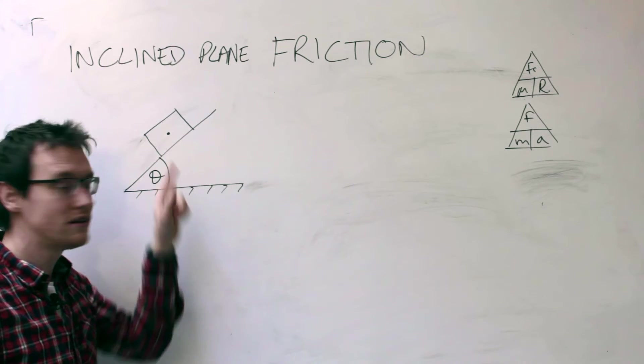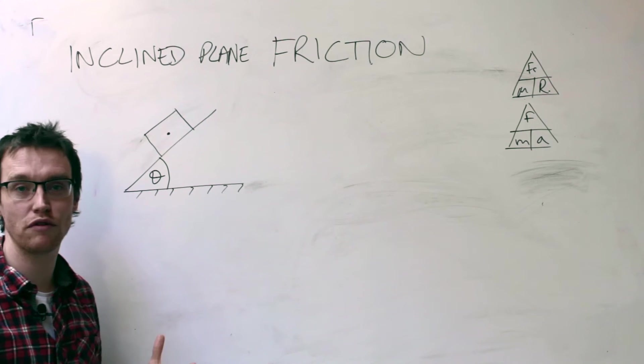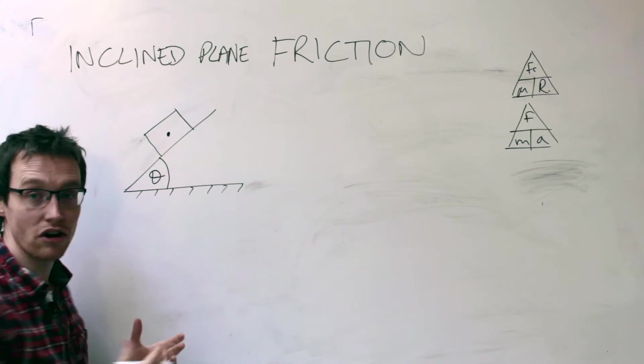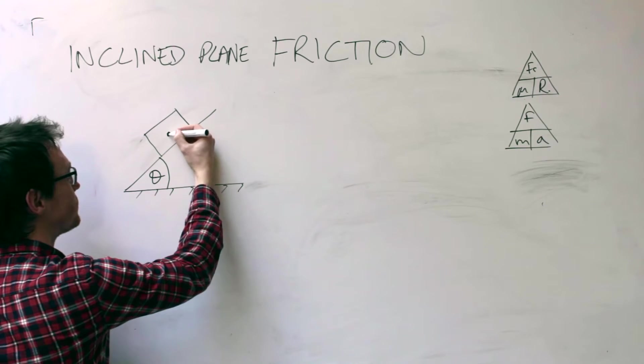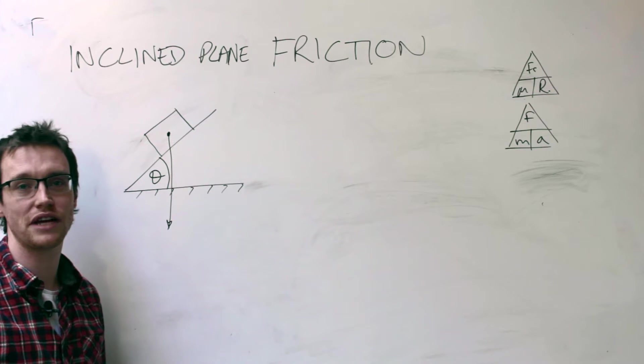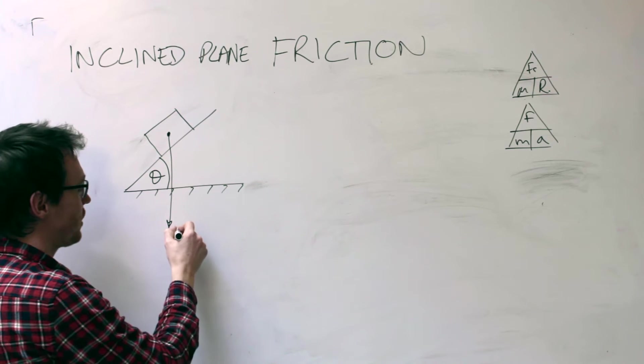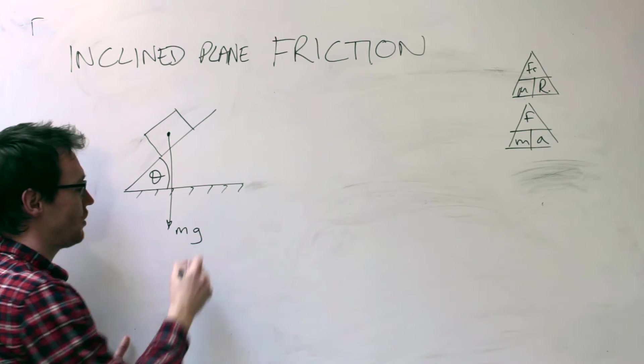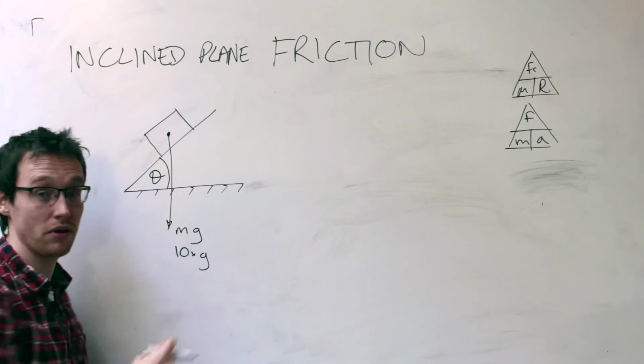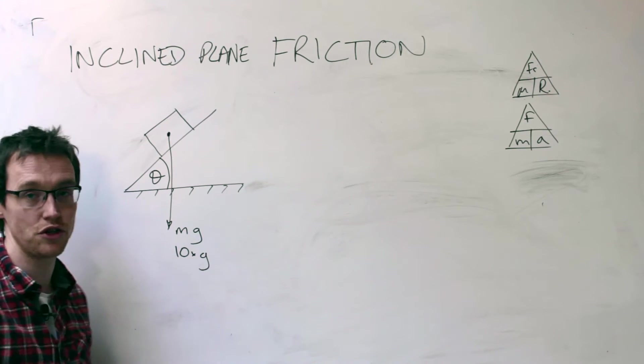It's common to denote that unknown angle with the Greek letter theta. I've got my block here and the block's going to have several forces acting on it. We're going to say this is again a block of mass 10 kilos and the force due to gravity always acts towards the center of the earth. So this is going to have a force of mg or 10 times gravity. If this was a block of 6 kilos then it'd be 6g.